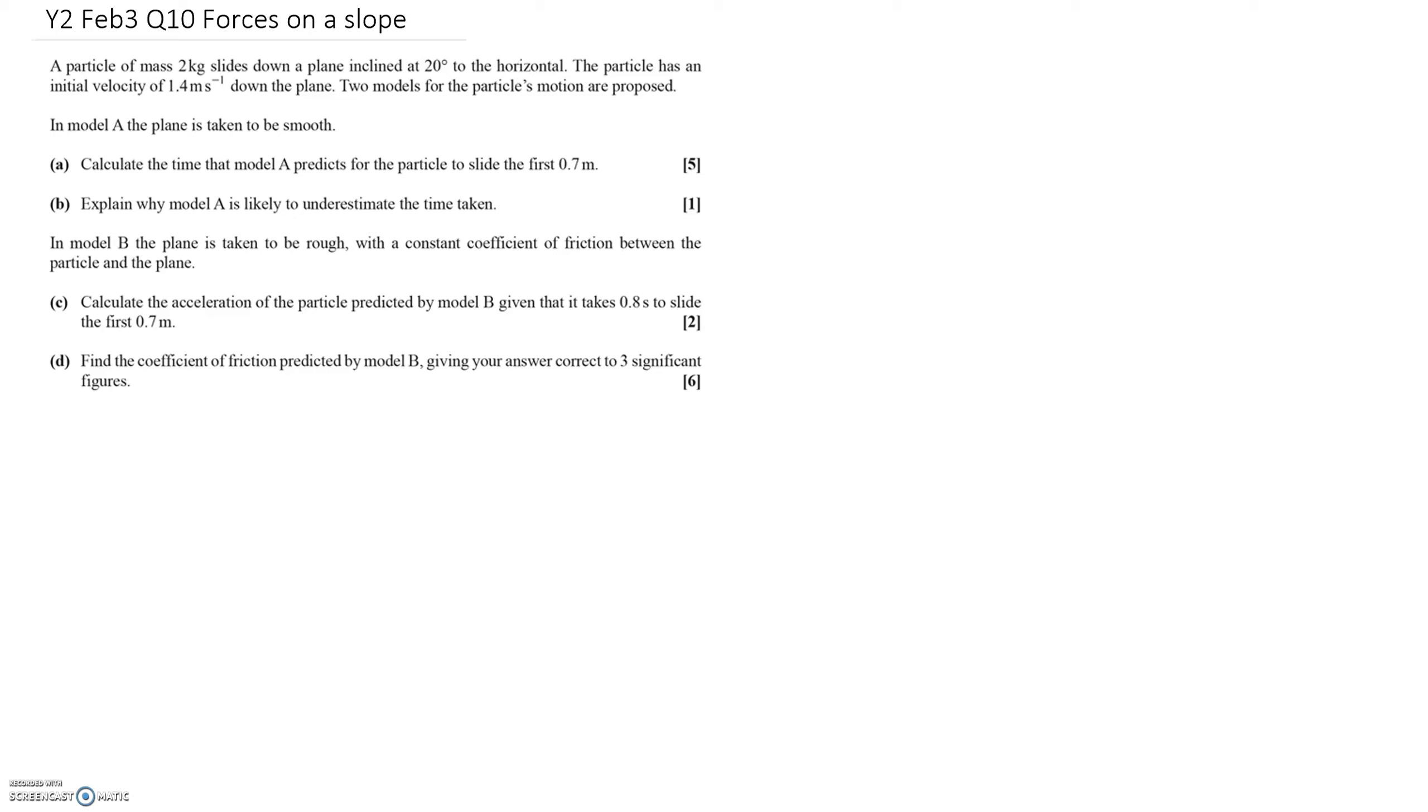So let's draw a sketch for this question. This is question 10. We've got a slope going down at an angle of 20 degrees. It's a 2 kilogram particle sliding down the slope at an initial velocity of 1.4 meters per second.